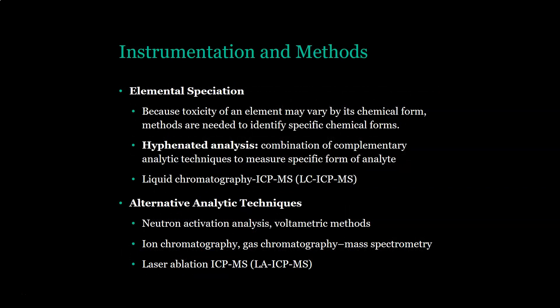A couple of other considerations: elemental speciation. Because the toxicity of an element may vary by its chemical form, methods are needed to identify specific chemical forms. For example, chromium-6 versus chromium-3 — one is helpful, the other is toxic. In those cases, we use hyphenated analysis, which is a combination of complementary analytical techniques to measure the specific form of the analyte. An example would be pairing liquid chromatography with ICP-MS, giving us LC-ICP-MS.